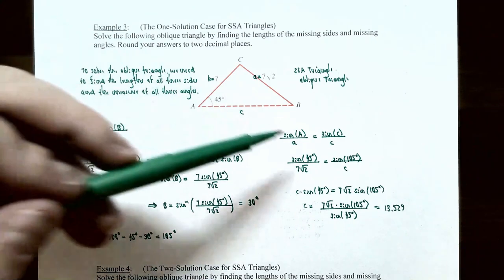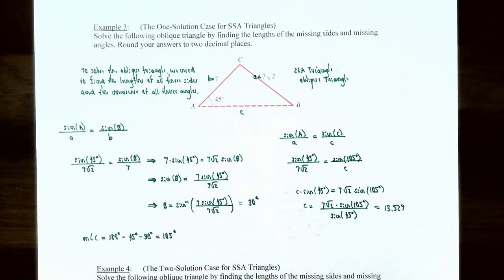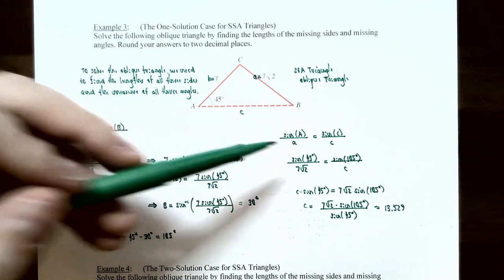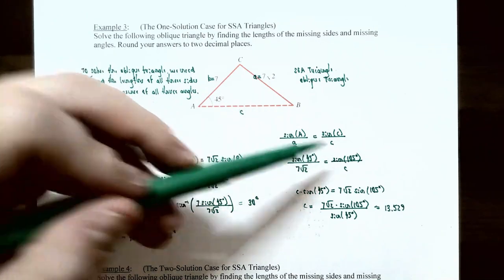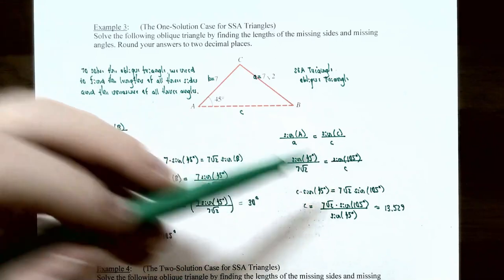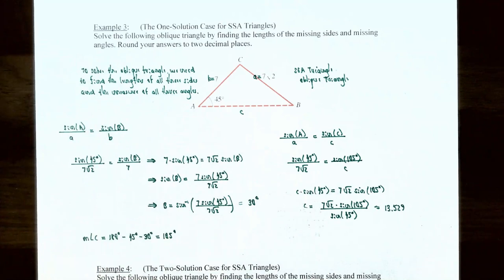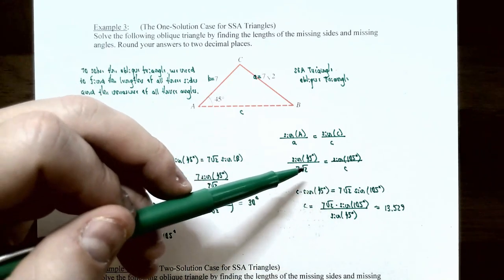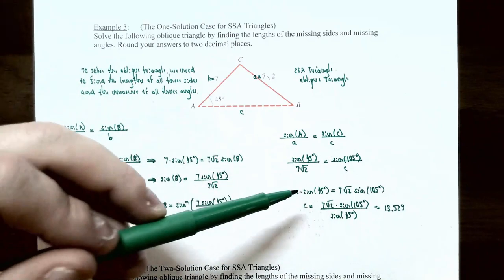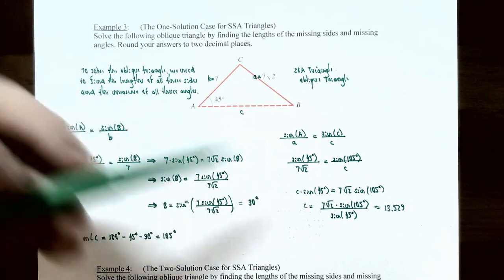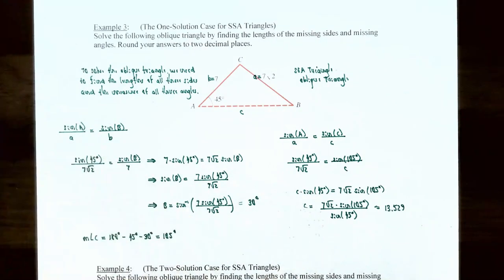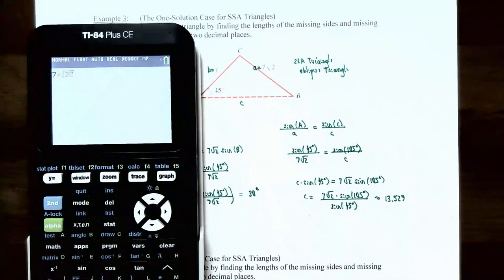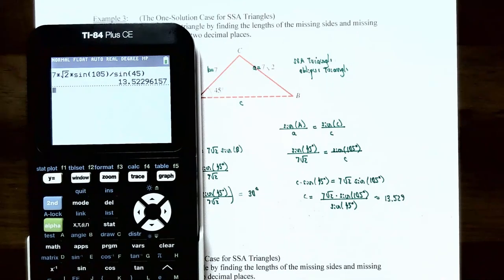Using sin(45°)/(7√2) = sin(105°)/c, cross-multiply to get: c·sin(45°) = 7√2·sin(105°). Dividing both sides by sin(45°): c = 7√2·sin(105°)/sin(45°). On the calculator: 7√2·sin(105°) divided by sin(45°) ≈ 13.529, or rounded to two decimal places, 13.53. That is the length of side C.